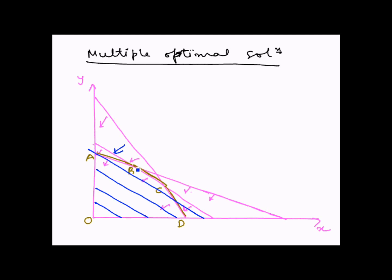What that means is that all the points from B to C would represent the optimal solution. So one of the objective function lines would be like this, and this portion from B to C will represent the optimal solution.